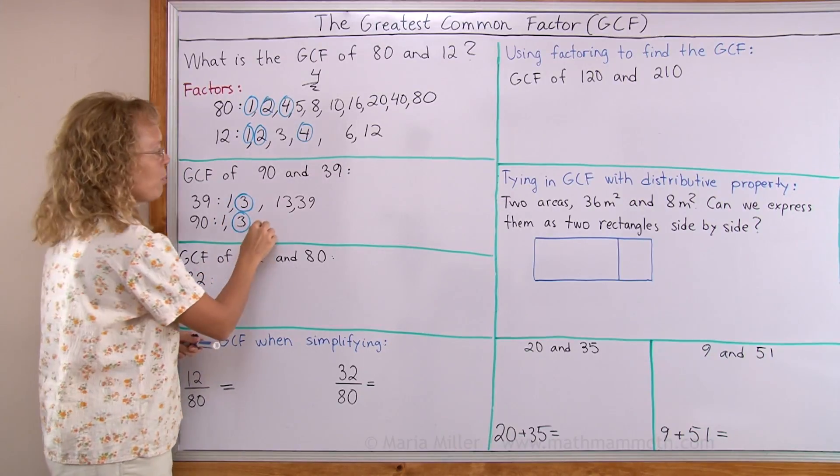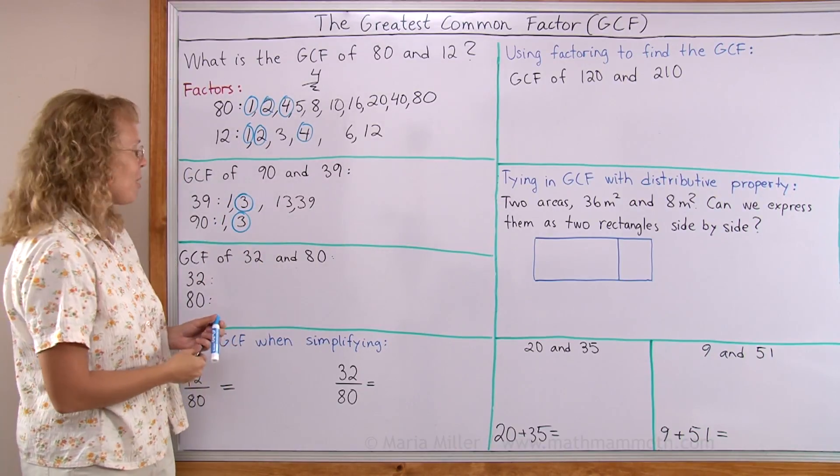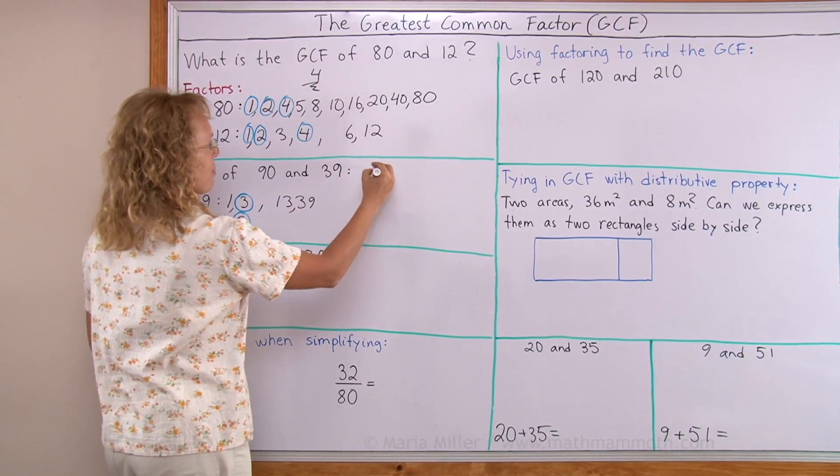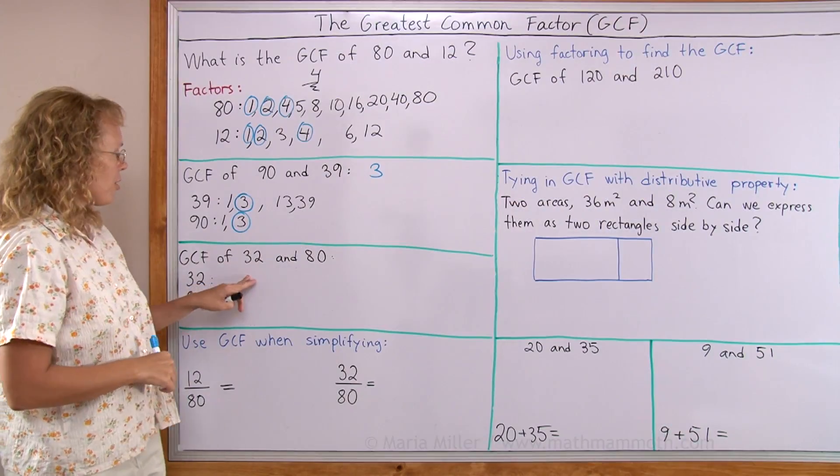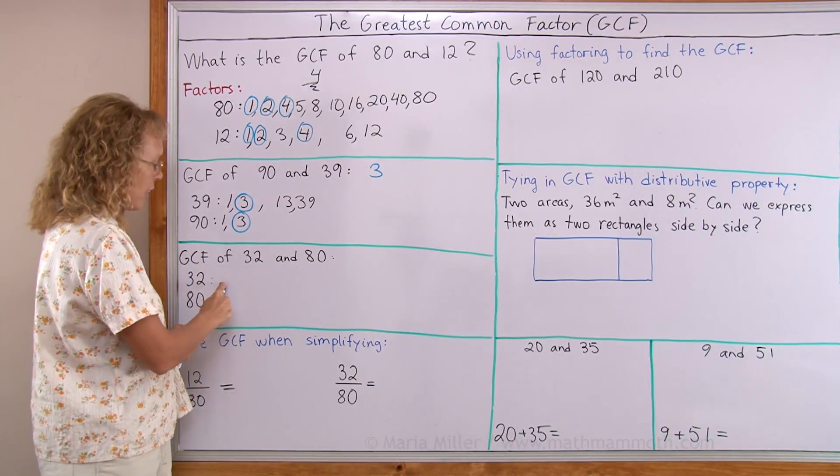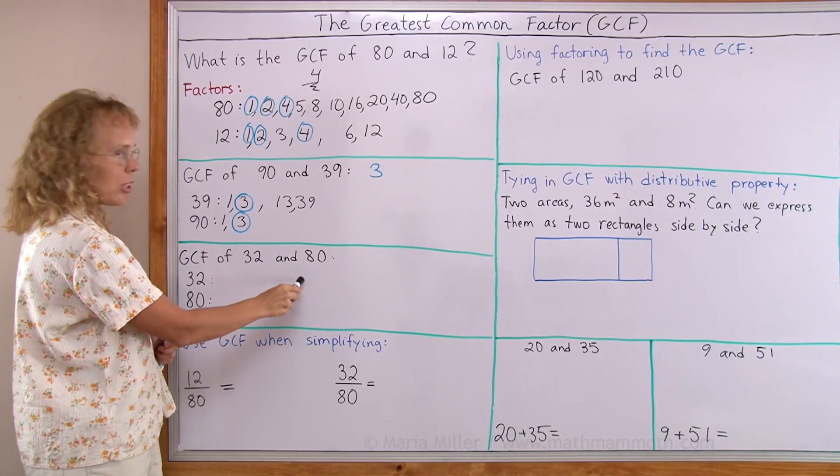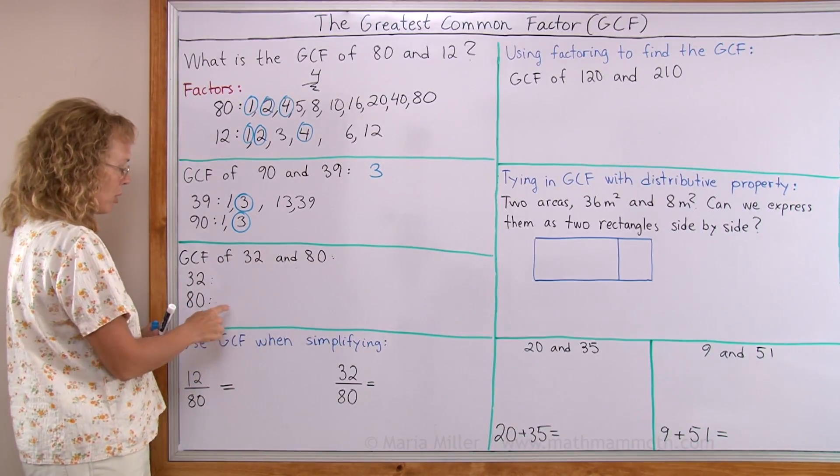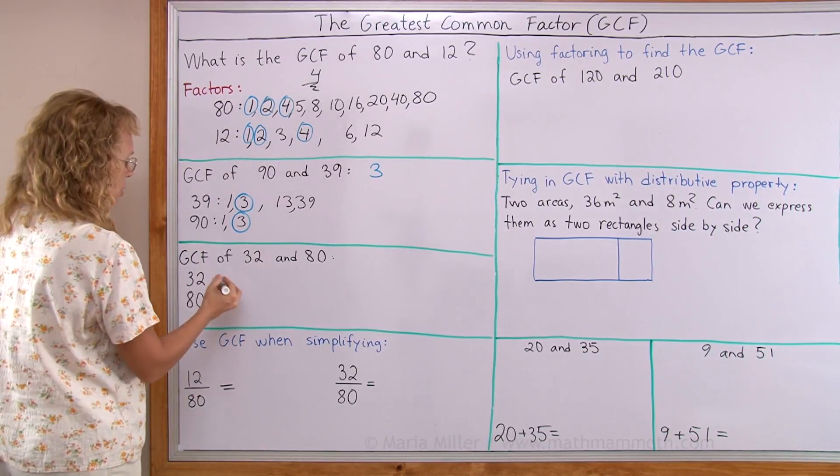So I don't have to worry about all the possible factors of 90. It has many more factors, I know, but 3 is the GCF. Here, 32 and 80. Again, let's do the same. Let's just find all the factors of one of them, and then check which ones of those would be factors of 80. Or maybe you just want to do 80 first. Either way, I'll do 32.